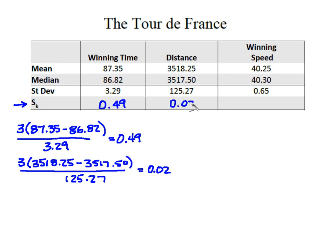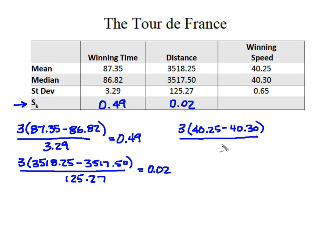And lastly for winning speed, I take three times the mean speed of 40.25, subtract the median of 40.30, and divide by the standard deviation of 0.65. That gives me a Pearson's of negative 0.23 for winning speed.